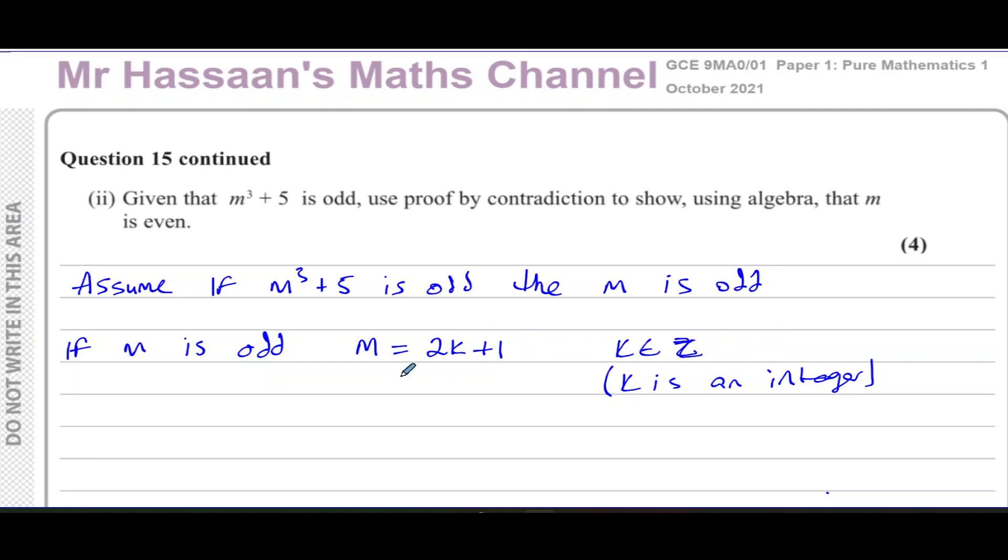Otherwise, this won't be true that m is odd. When m is equal to or expressed as 2 times an integer plus 1, it's going to be odd because the multiples of 2 are even, 1 more than multiples of 2 are odd. So that represents odd numbers. So therefore, we can say m³ + 5 will therefore be equal to (2K + 1)³ + 5.